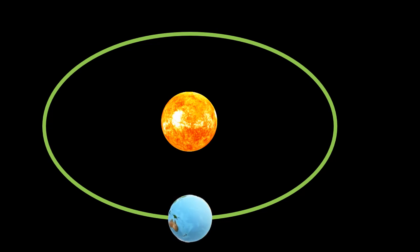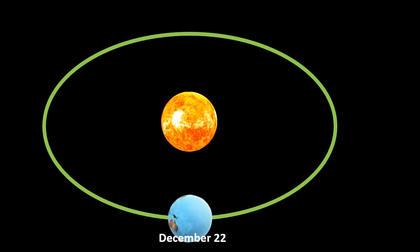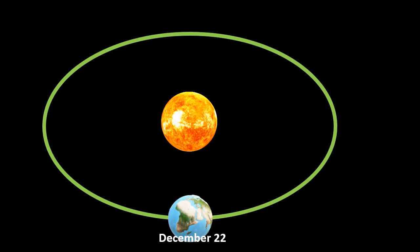So that is all about the Earth's movements. The Earth has two types of movements: rotation and revolution. Rotation causes day and night, while revolution causes the variation in the duration of day and night and the change in seasons. I hope you understood well. Thank you for watching — please don't forget to subscribe to my channel.